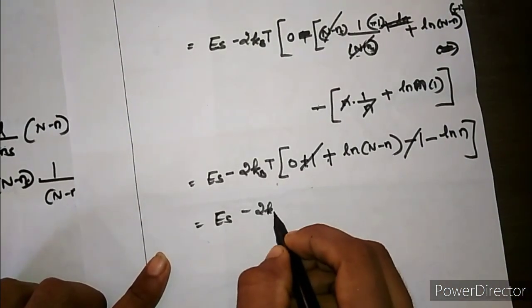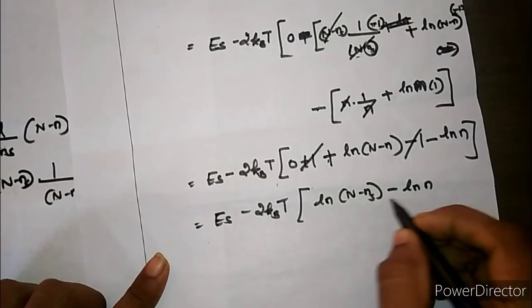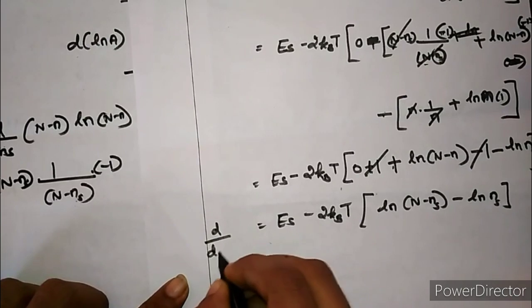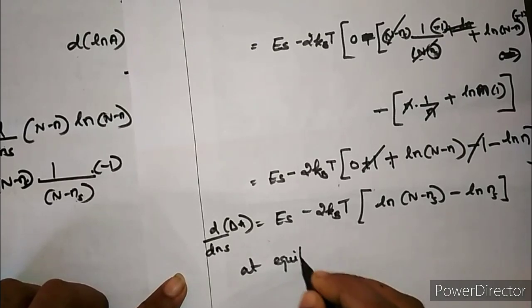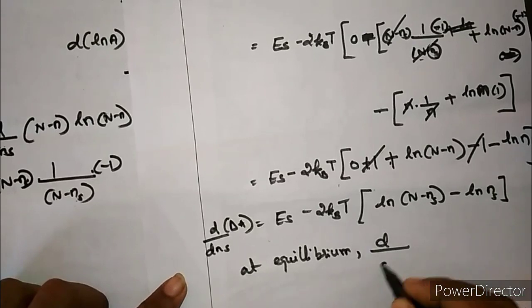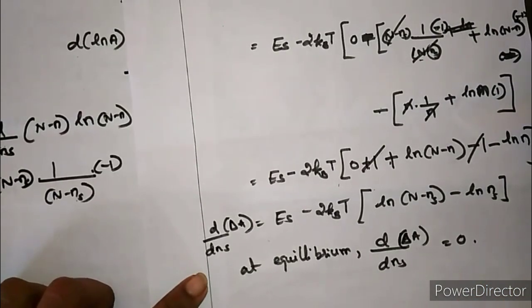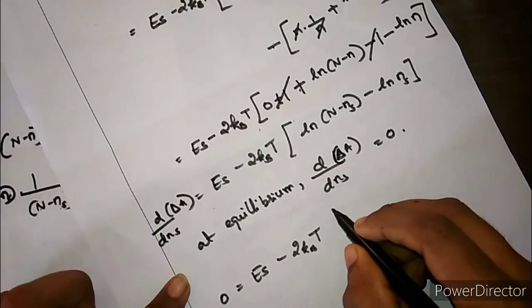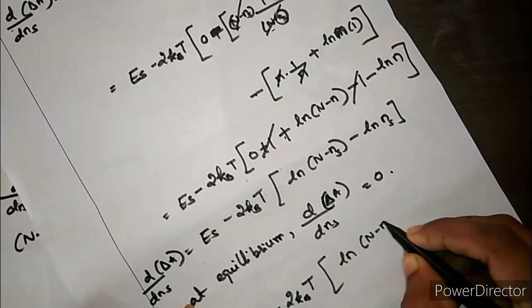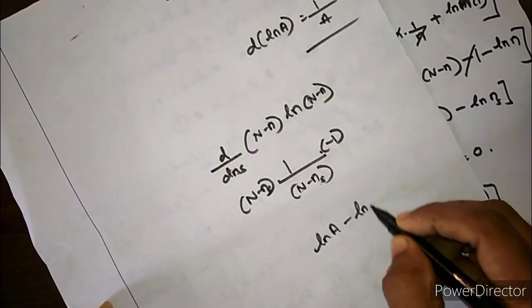After simplification: d(ΔA)/dNs = Es − 2kBT·[ln(N−Ns) − ln(Ns)]. At equilibrium, d(ΔA)/dNs = 0. Setting the equation to zero: 0 = Es − 2kBT·ln((N−Ns)/Ns). Using ln(A) − ln(B) = ln(A/B), rearranging gives: ln((N−Ns)/Ns) = Es/(2kBT).